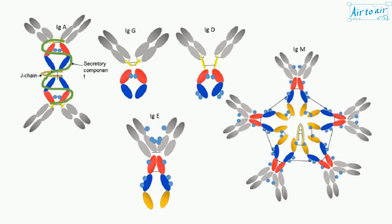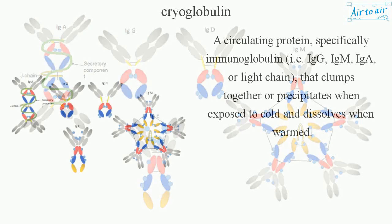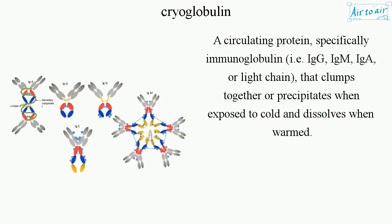Cryoglobulin: a circulating protein, specifically immunoglobulin — i.e., Ig — M, IgG, IgA, or light chain, that clumps together or precipitates when exposed to cold and dissolves when warmed.